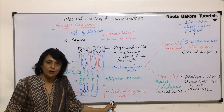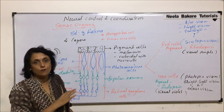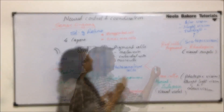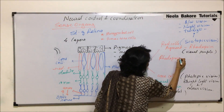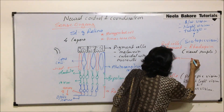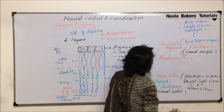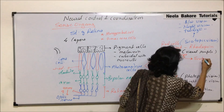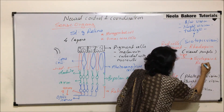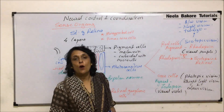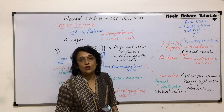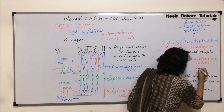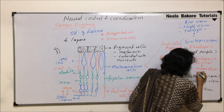Pigment cells, rod cells, cone cells, bipolar neurons, and ganglionic neurons — these are the four main cells and four main layers. Coming to how rod cells work: rhodopsin, that is the visual purple, undergoes bleaching in the presence of light. When light falls on rhodopsin, it undergoes bleaching and two substances are formed — one is known as scotopsin and the other is retinal.